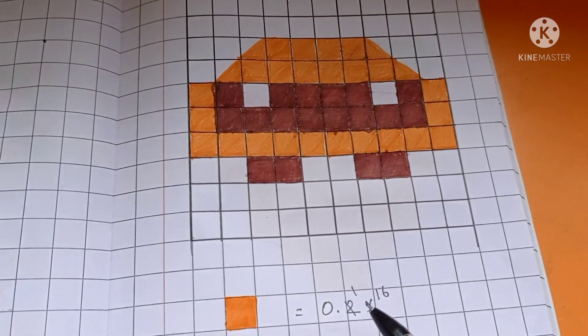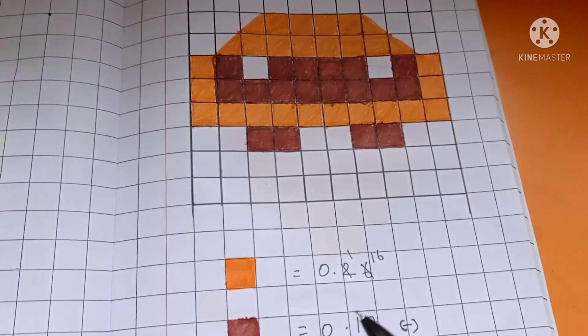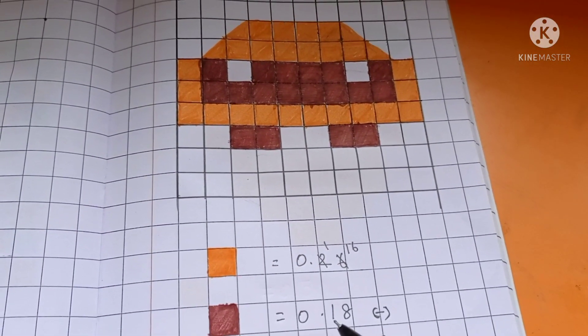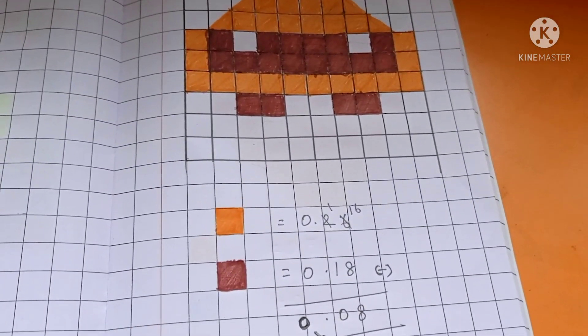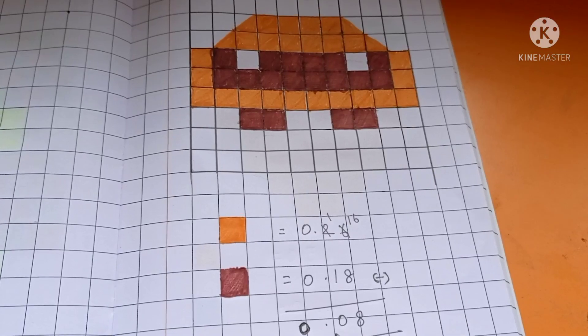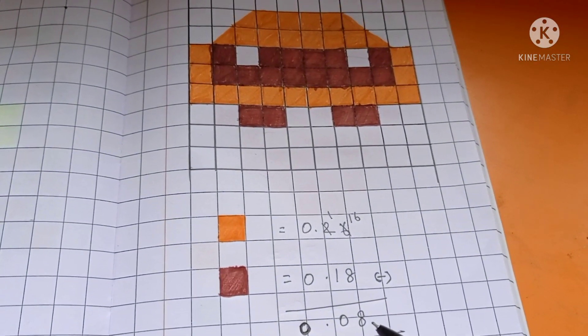In decimal you have to write 0.26 and the brown color 0.18. So you can do the operation 0 subtraction 0.08.